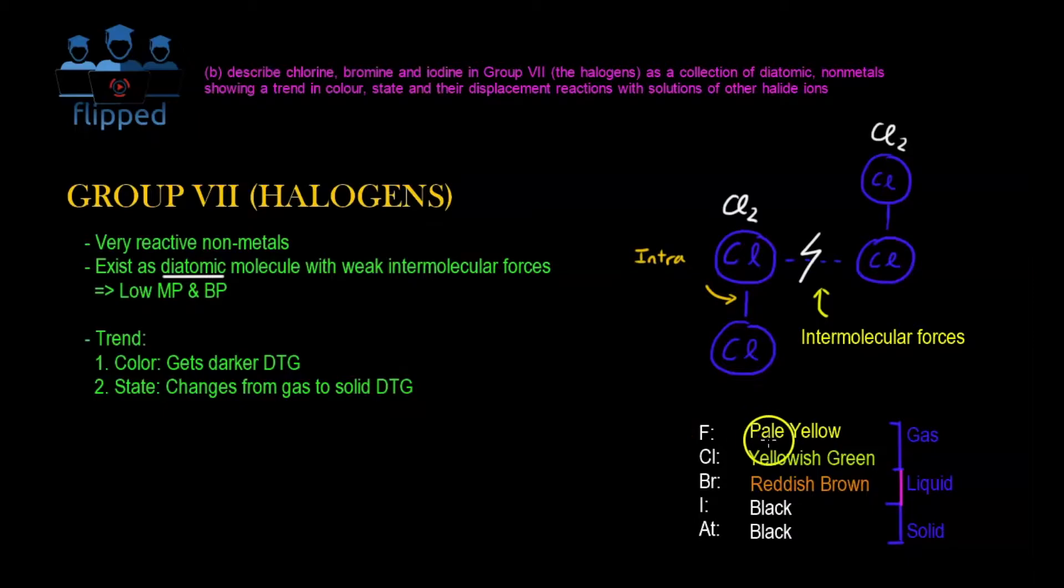For example, fluorine is a pale yellow gas. Chlorine is a yellowish green gas. Bromine is a reddish-brown liquid, and iodine and astatine are both black solids.